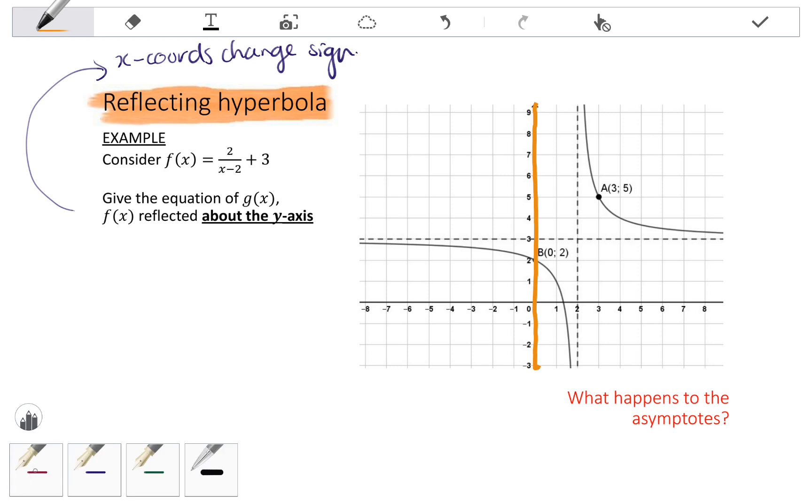So, I'd like to draw the reflection. If I look at the point A, the coordinates 3, 5 will go to negative 3, 5, where only the x-coordinate has changed sign. The coordinates of the point B are 0, 2. If only x changes sign, 0 can't really change sign, so it stays the same. Notice my y-intercept does not change when I reflect about the y-axis.